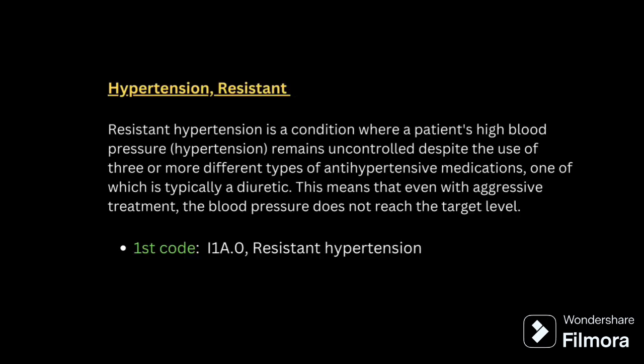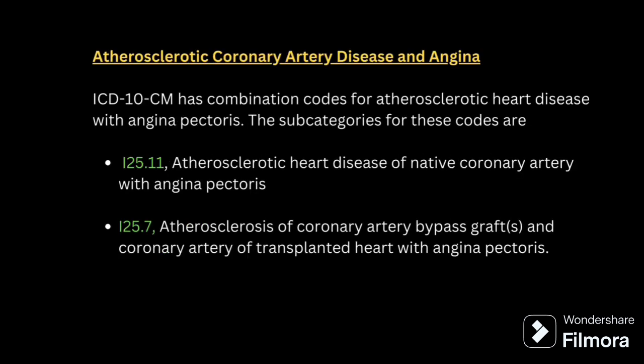Resistant hypertension is a condition where a patient's high blood pressure remains uncontrolled despite the use of three or more different types of anti-hypertensive medications, typically including a diuretic. Even with aggressive treatment, the blood pressure does not reach the target level. Next, atherosclerotic coronary artery disease and angina: atherosclerosis means plaque formation in the coronary artery. There are two different codes: I25.11 for atherosclerosis in native coronary artery with angina, and I25.7 for atherosclerosis in a bypass graft or transplanted heart.